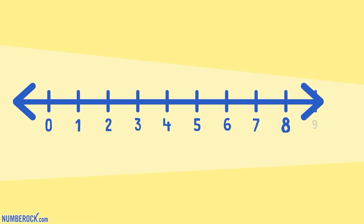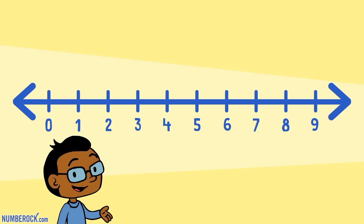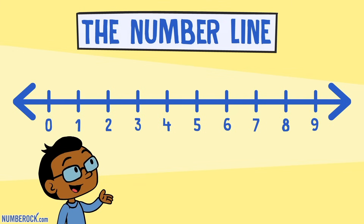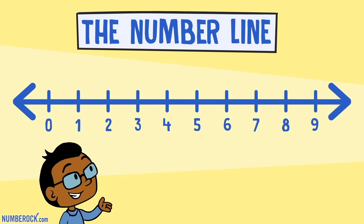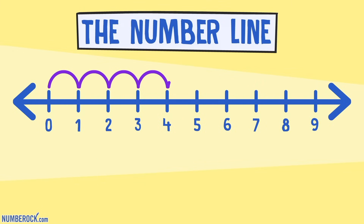Here are the numbers 1 through 9, on a diagram we call a number line. They're represented by lengths and marks, with points spaced equally apart.